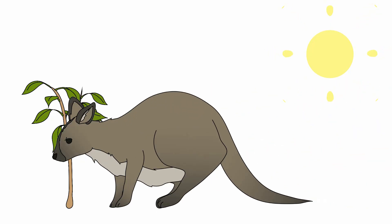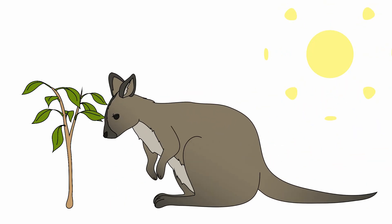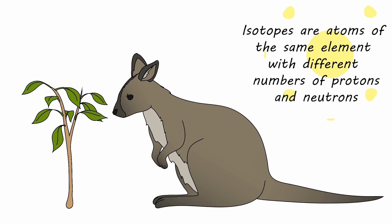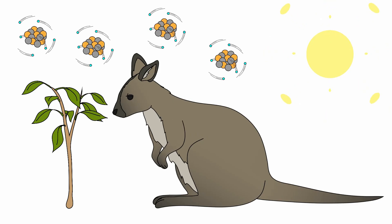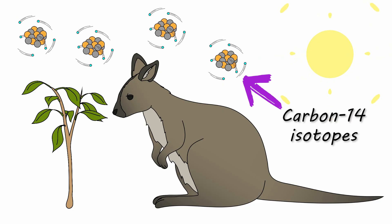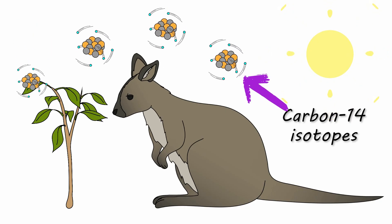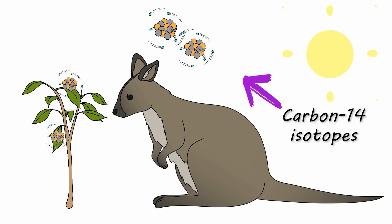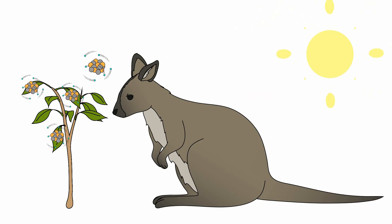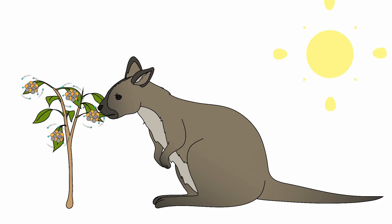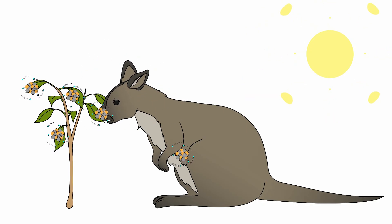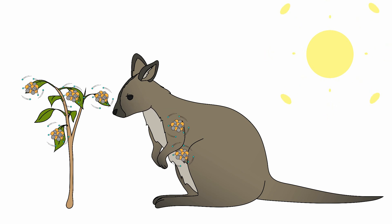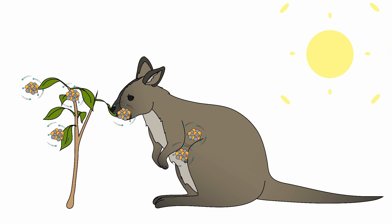Radiocarbon dating measures the amount of carbon-14, a radioactive isotope found naturally in our environment. Carbon-14 is formed in the atmosphere by the interaction of cosmic rays and nitrogen. Plants then absorb carbon-14 during the process of photosynthesis. Animals take in carbon-14 from eating plants or other plant-eating animals.